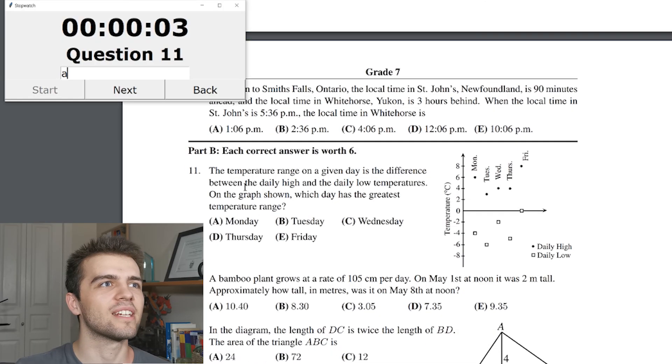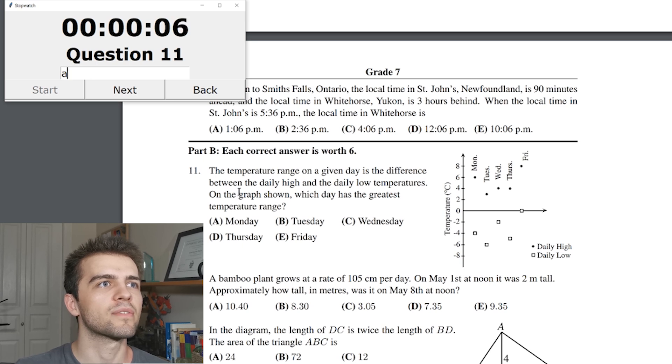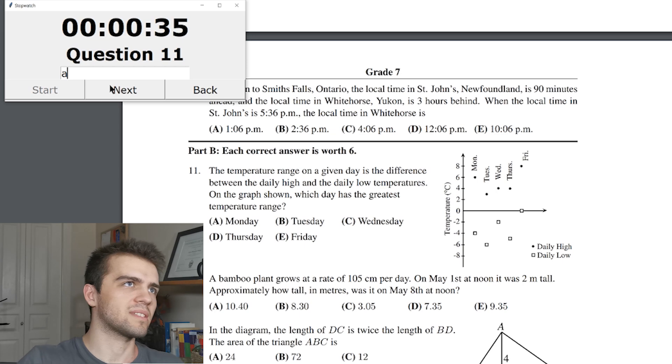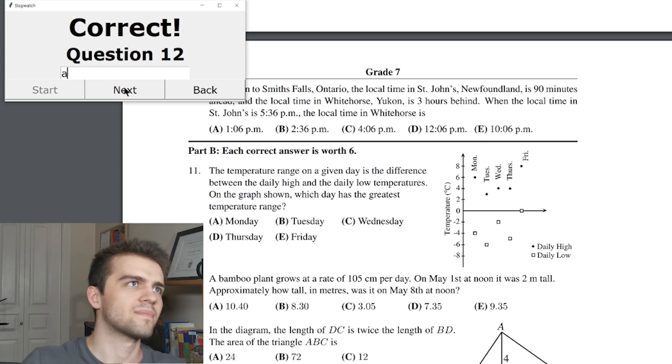The temperature range on a given day and the difference... There's a lot of stuff here. A given day is the difference between the daily high and the daily low. Okay, good. On the graph below, which day has the greatest temperature difference? And of course they make them close for someone like me with time pressure. What a cruel thing. 10 degrees. 6 plus 3 is 9 degrees. This is definitely less. Minus 5 to 4, 9 degrees. It's looking like it's going to be Monday. Answer is A. Correct. Good.